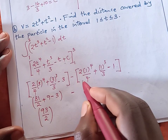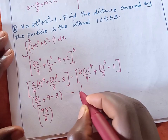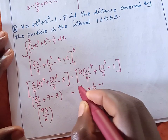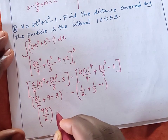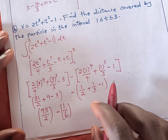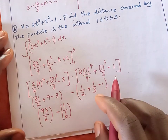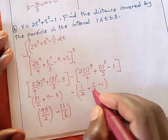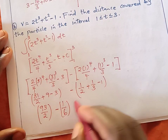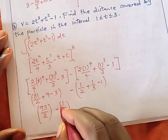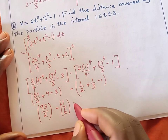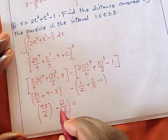Now we take away the result using t equals 1. So: 2 times 1 raised to power 4, divided by 4, plus 1 cubed divided by 3, minus 1. This gives us one half plus one third minus 1. This evaluates to 1 over 6. However, we must have a negative here — negative 1 over 6.